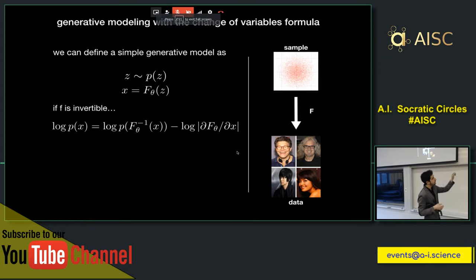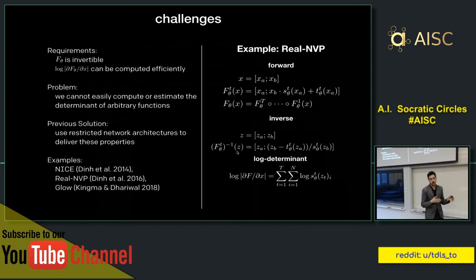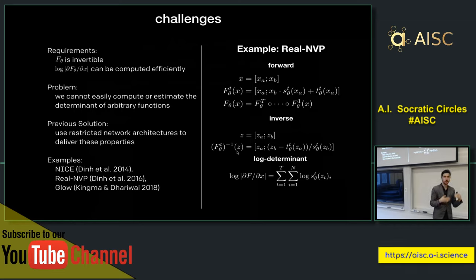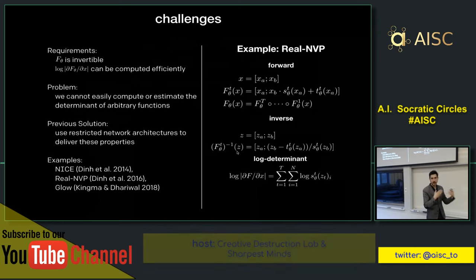There are some challenges with generative models of this flavor. We have two big requirements on the function f: it has to be invertible for the change of variables to be defined, and the log determinant of the Jacobian cannot be efficiently computed naively — it's cubic in the dimensionality of the data. So that's not going to scale gracefully to large, high-dimensional datasets. What's been done in previous models is to restrict the form of f such that we get these properties for free.